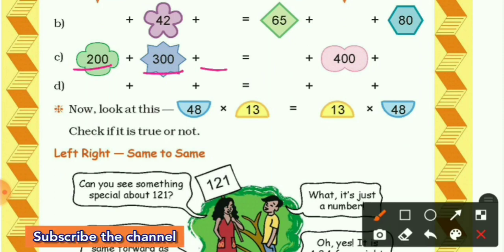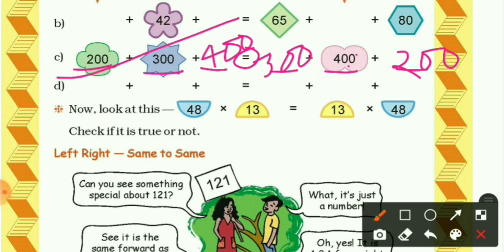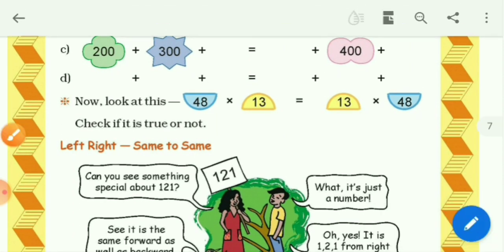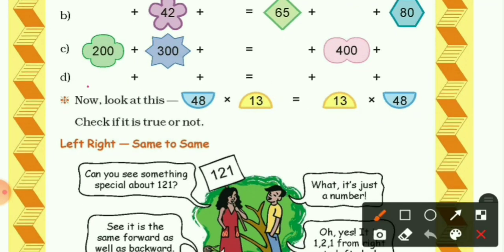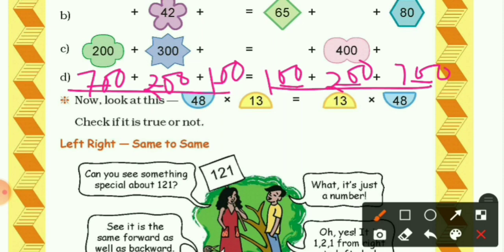Next question: we have 200 plus 300 plus blank on the left, and blank plus 400 plus blank on the right, both equal. Since 400 appears on the right, we write 400 as the blank on the left. Then we fill in 300 and 200 on the right side. For the last question, all spaces are blank — you can choose your own numbers, like 700 plus 200 plus 100, and write the same numbers on the right side in any order.